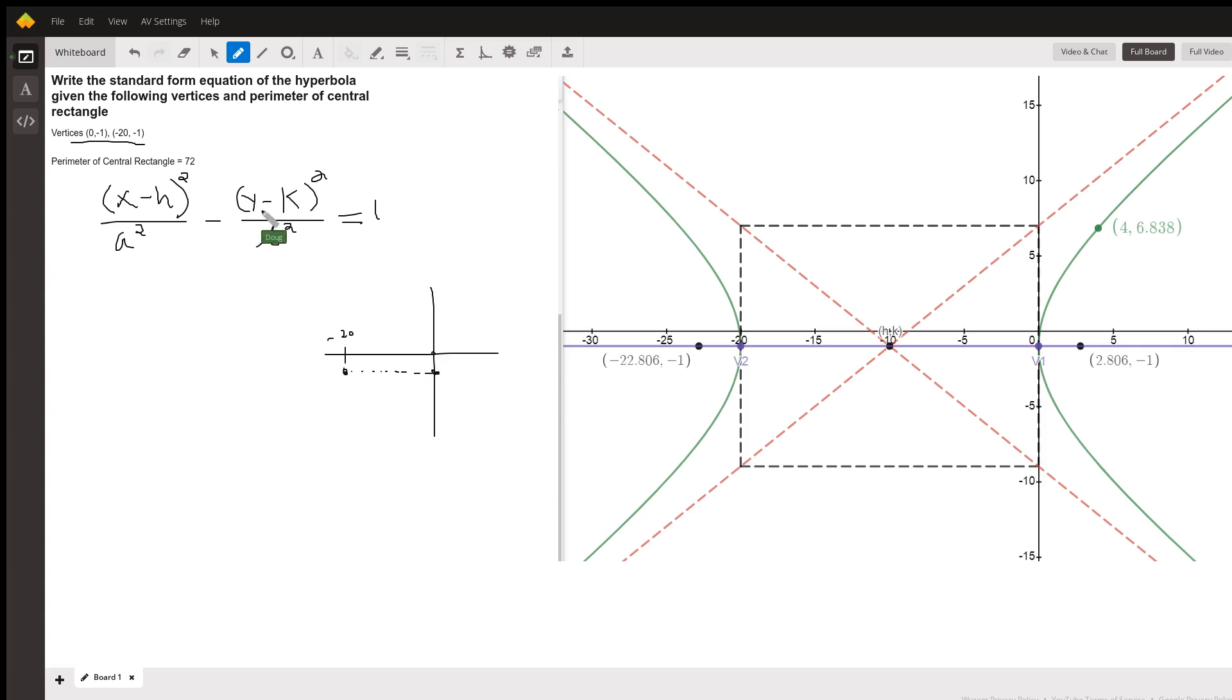If we want to find the average of the x coordinates, 0 plus negative 20 is negative 20 divided by 2, negative 10. So the center of this hyperbola is at negative 10, negative 1.